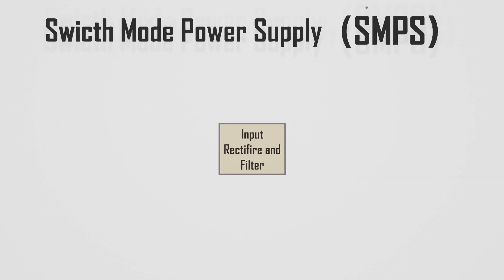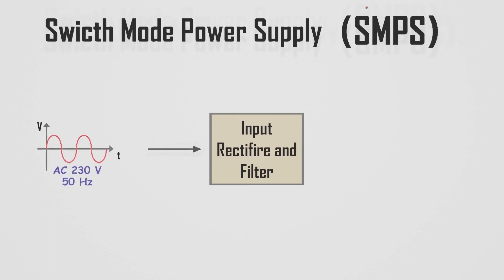Initially, the 230 volt AC input signal from the source is provided to the input rectifier and filter circuit. This converts the AC to rippled DC.